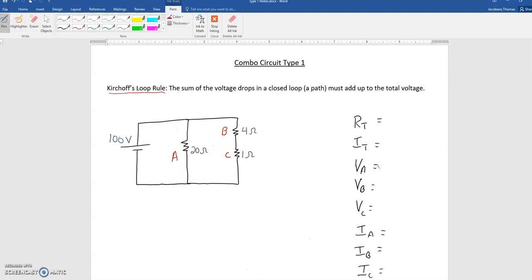But if we were to follow some current that went this way and went through B and C, and then went back to the battery, there are now two resistors that are going to share the 100 volts. Basically the voltage drop of B plus the voltage drop of C is going to add up to 100 volts.